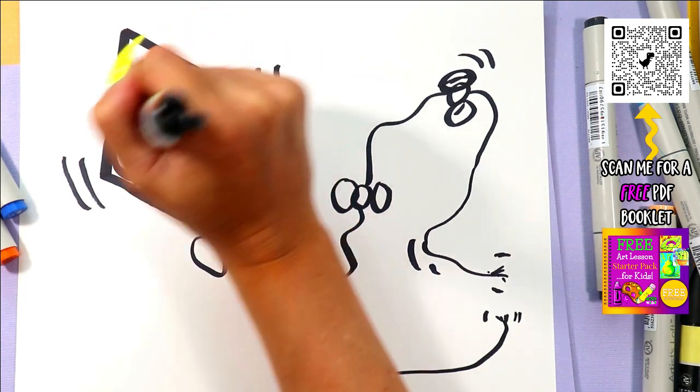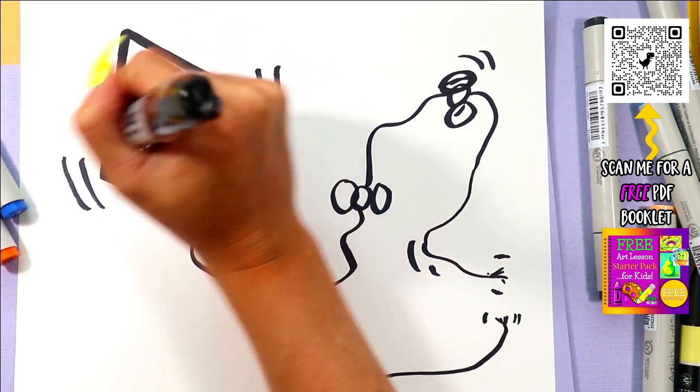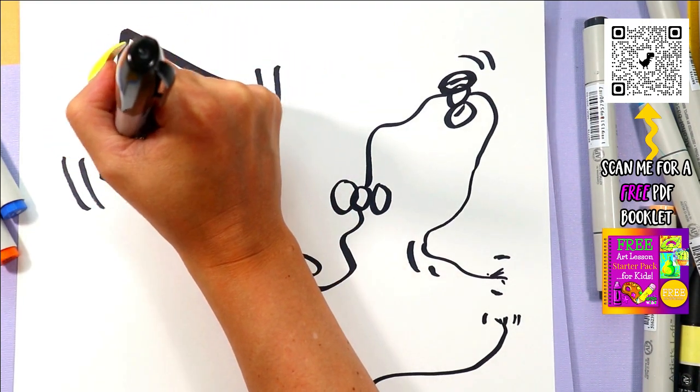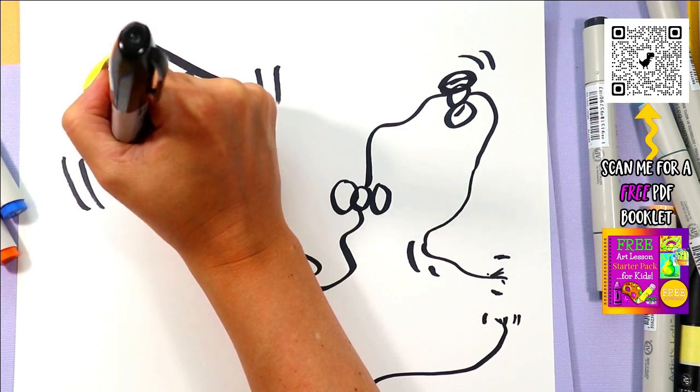In each eye, we're gonna draw one circle. And then color in the dark of the eye, just leaving that one circle nice and white.